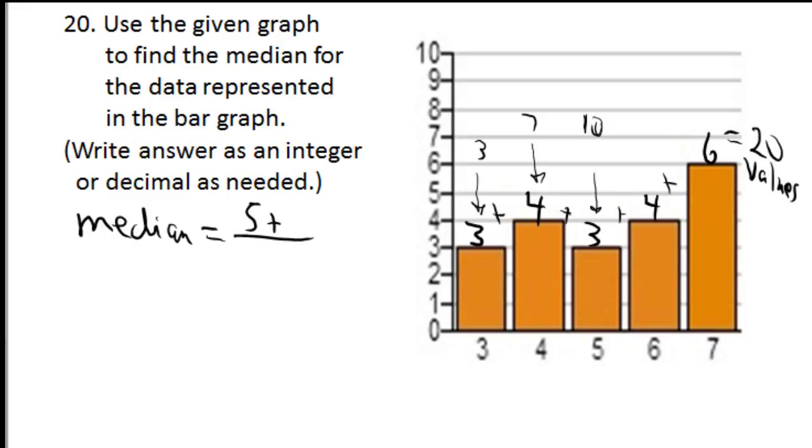If the tenth number is five, the eleventh number, in fact the next four numbers, are sixes. The eleventh number falls in here. The tenth number is the very last one of those fives. Three plus four is seven, plus three is ten. So the tenth number is the very last one of the fives. The eleventh number is the very first six. The two numbers you need to average are five and six, which is eleven halves. And if you want to write it as a decimal, that would be 5.5. That's the median.